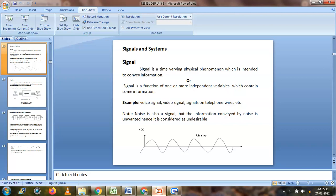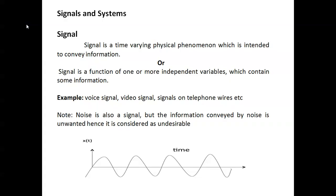A signal is a time-varying physical phenomenon which is intended to convey information. A signal is a function of one or more independent variables. Examples include video signals and telephone wire signals. Noise is also a signal that is conveyed with the information, but it is an unwanted or undesirable signal. This is an example of a continuous time signal.